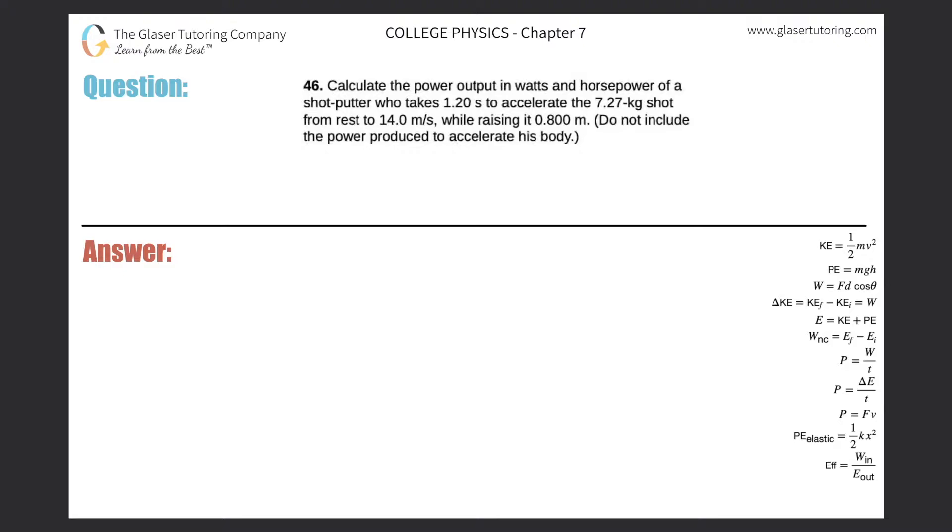Number 46, calculate the power output in watts and horsepower of a shot putter who takes 1.2 seconds to accelerate the 7.27 kilogram shot from rest to 14 meters per second while raising it 0.8 meters.